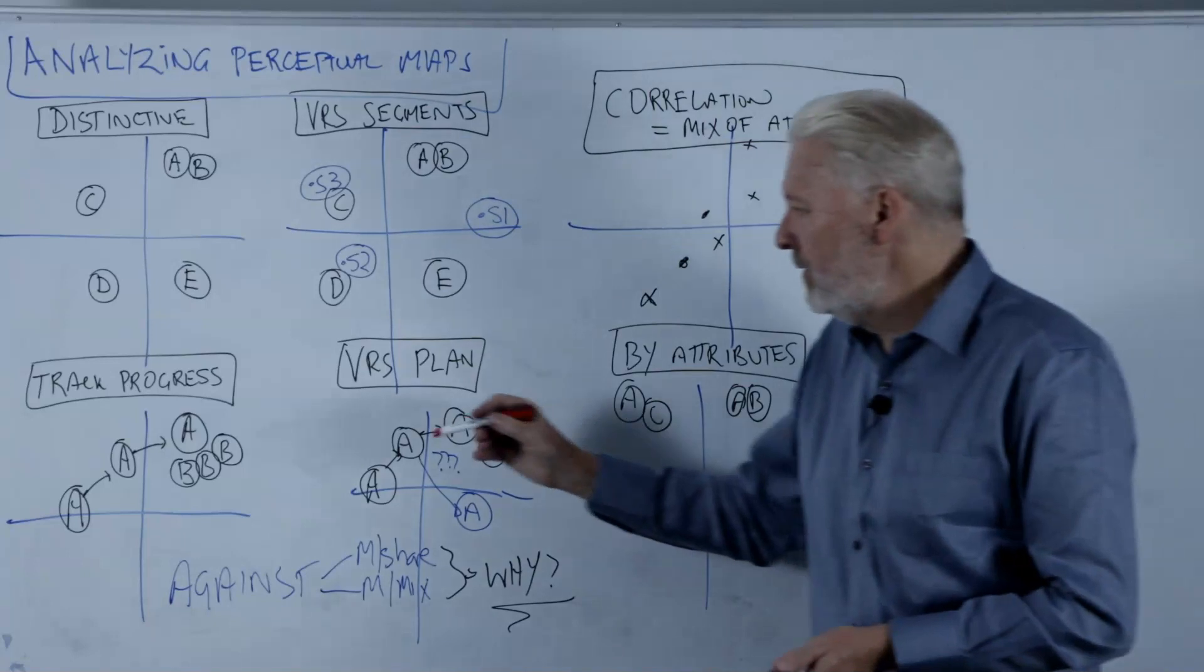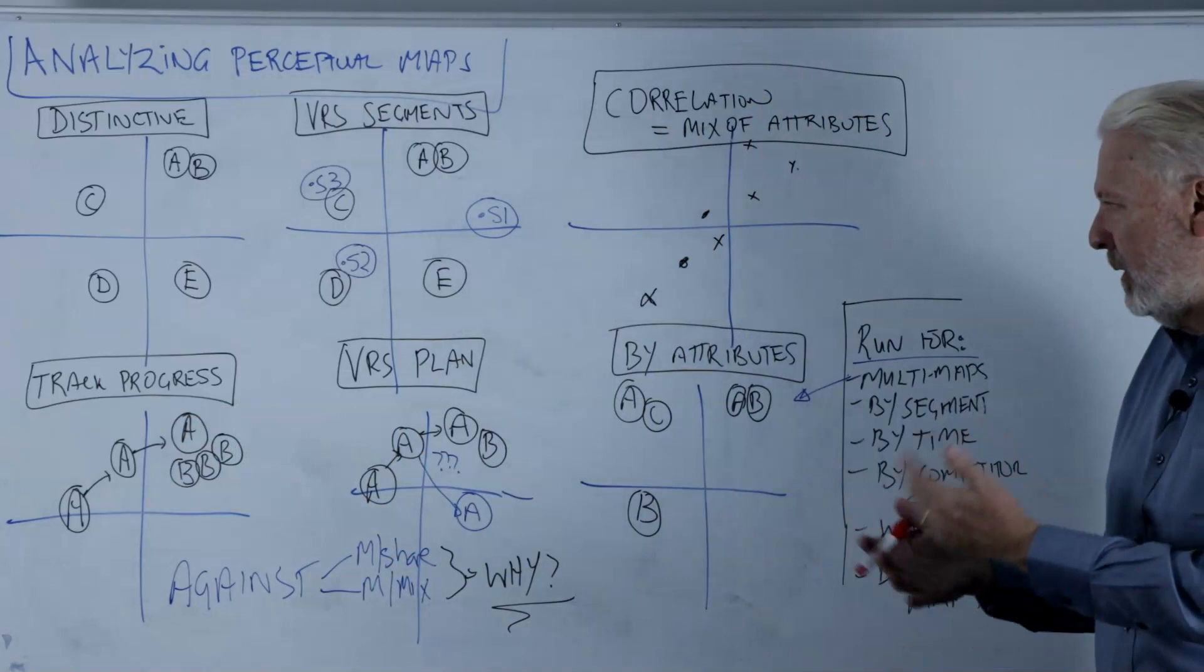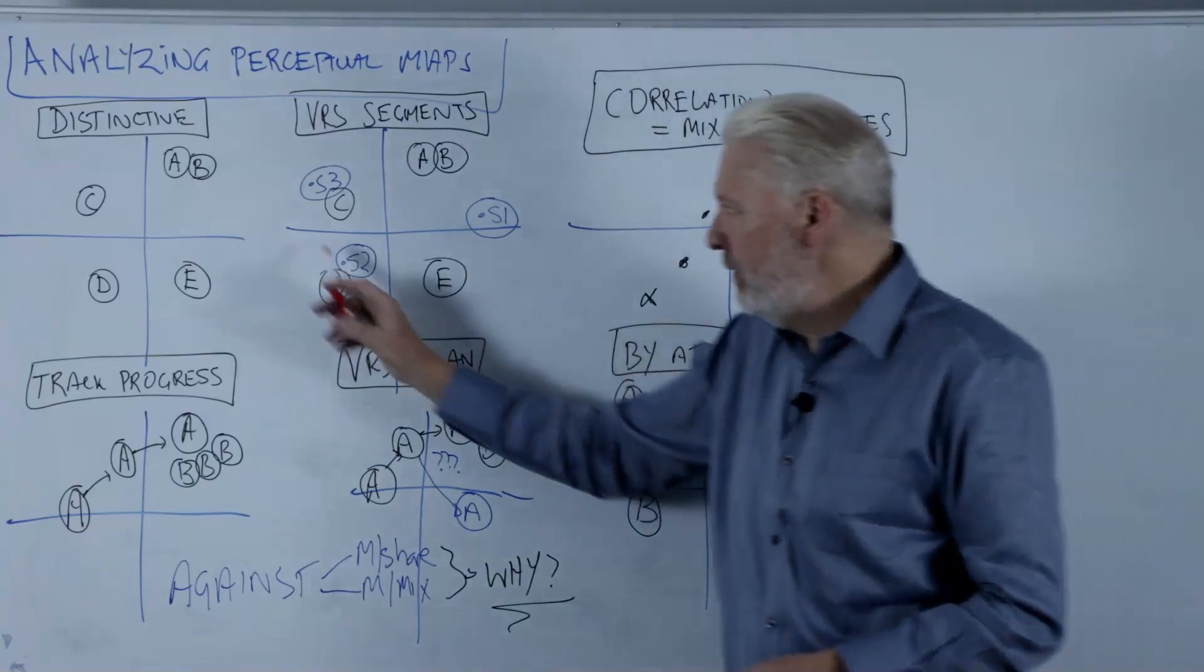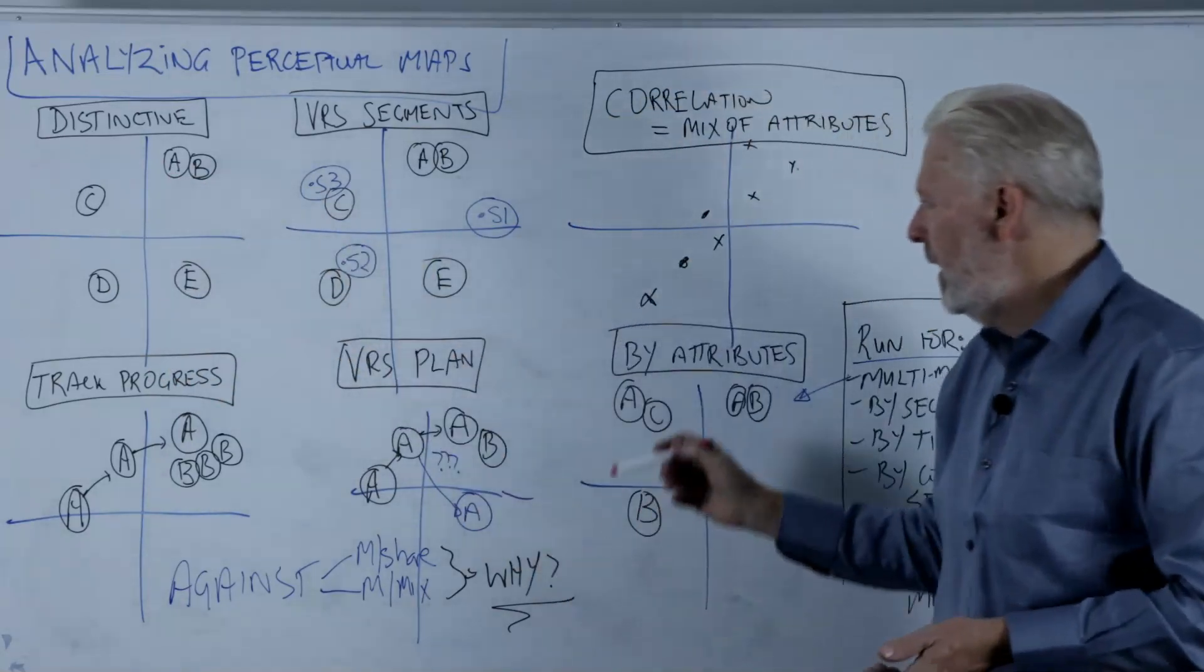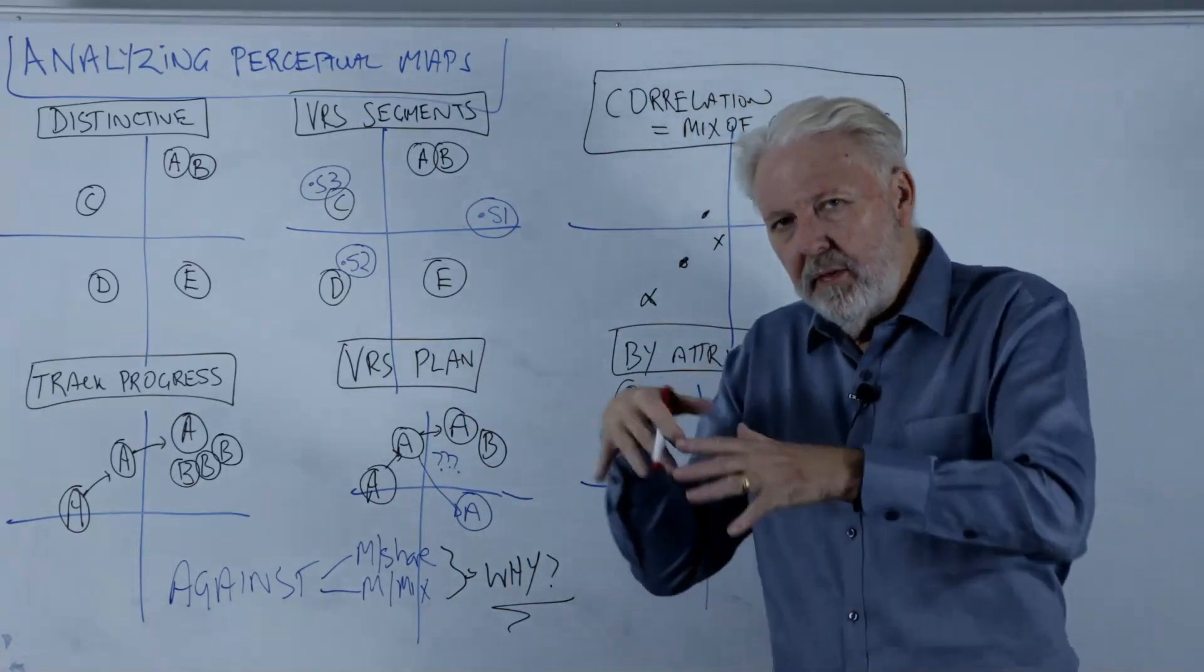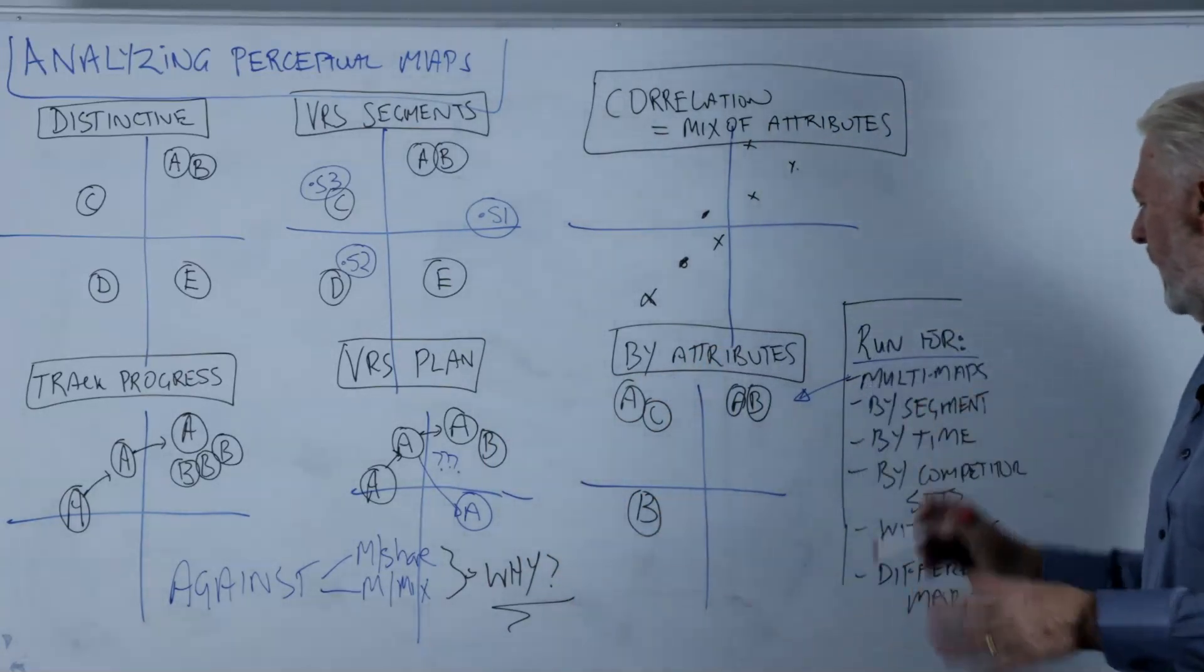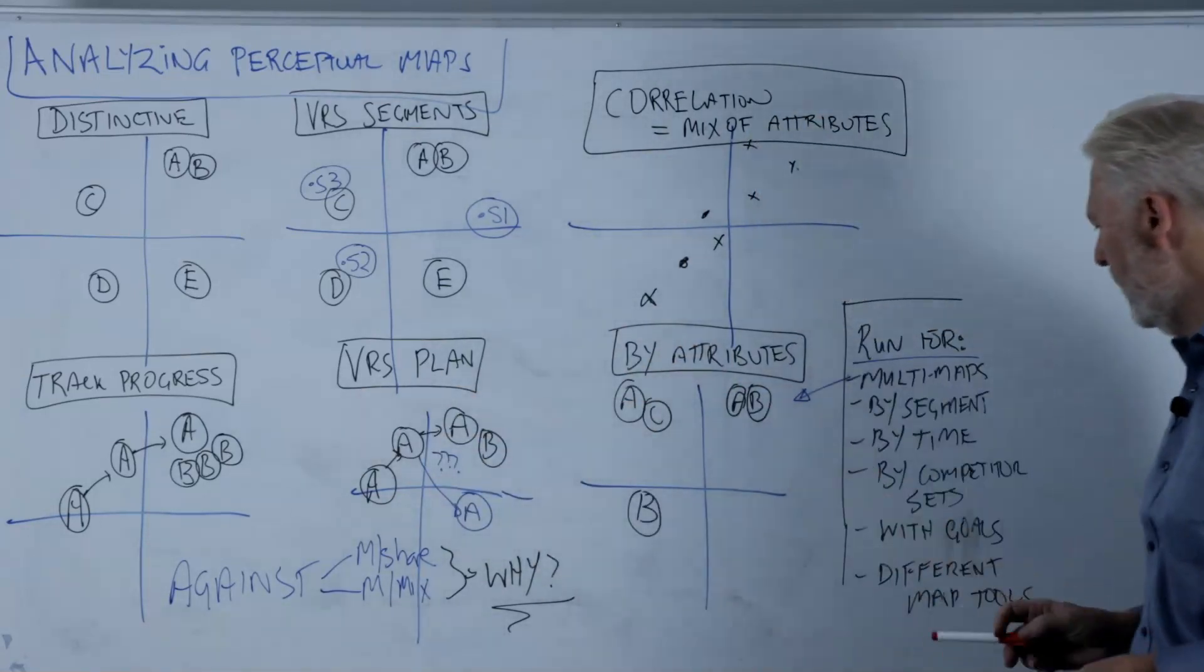Looking at it by time, so we could overlay the time or have a series of maps that show that, depending on how many brands we've got listed. We could look against particular competitors. So we might find for this map, B and C are more relevant. And then we have a change of a map to change of attributes. And then, let's have a closer look at these other brands because they're nudging us or they're imposing on our positioning space for those. So by competitors, obviously we need to look against goals. What we're trying to achieve, very important.